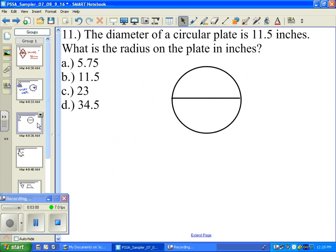Let's go on to the next. The diameter of a circular plate is 11 and a half inches. What is the radius on the plate in inches? So if this were the diameter, and the diameter according to what we have here is 11.5 inches.